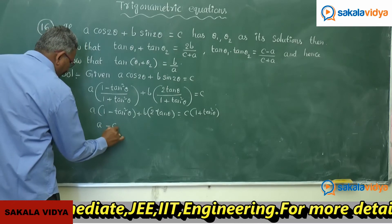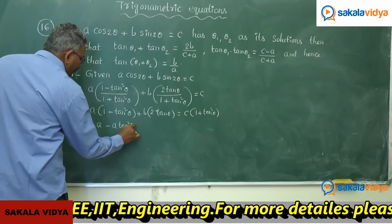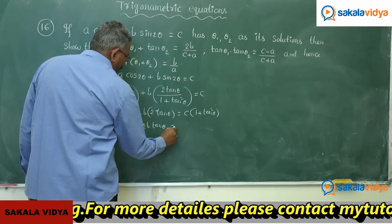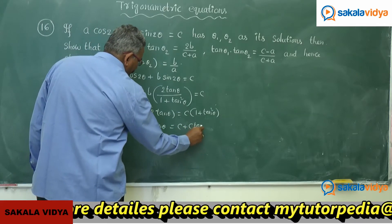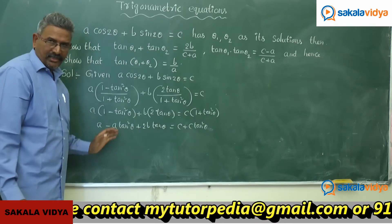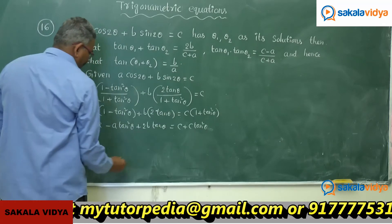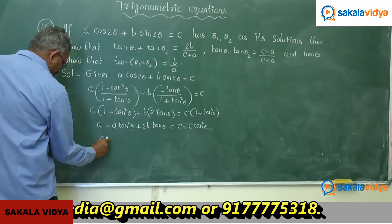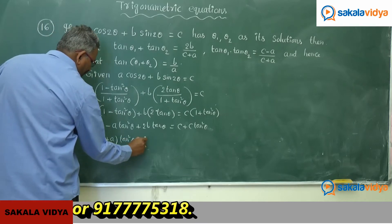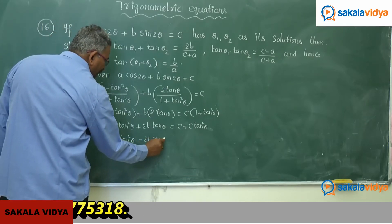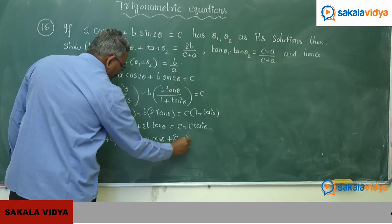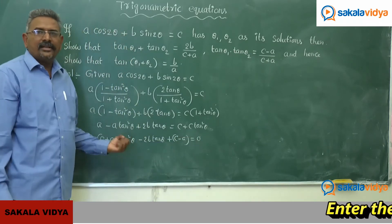Expanding: a − a·tan²θ + 2b·tanθ = c + c·tan²θ. Rearranging, taking all terms to one side, we get: (c+a)·tan²θ − 2b·tanθ + (c−a) = 0. Now it is a quadratic equation in tan θ.